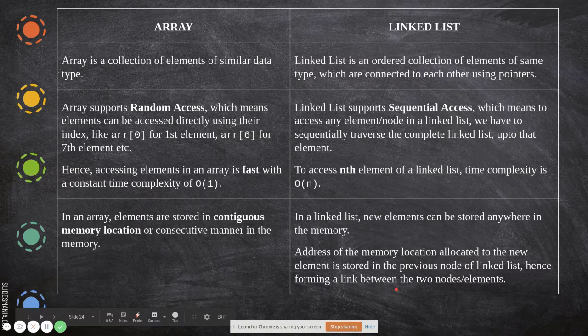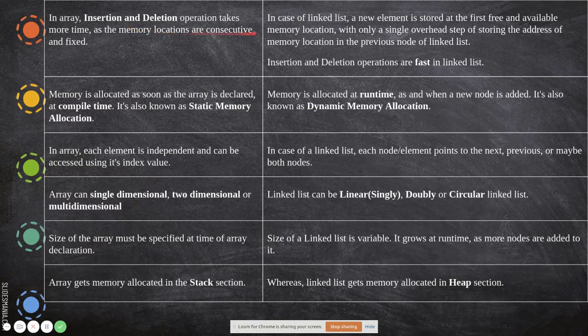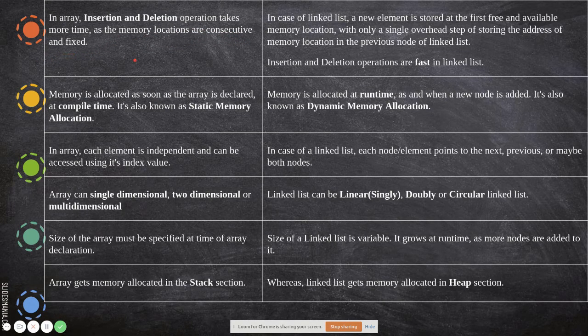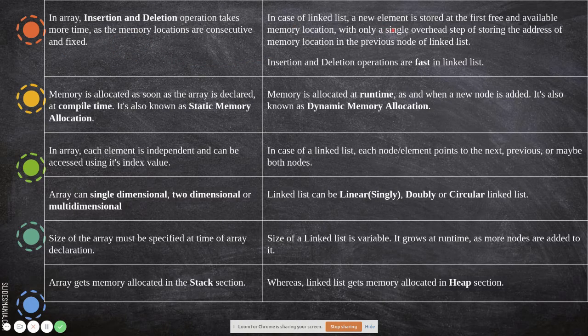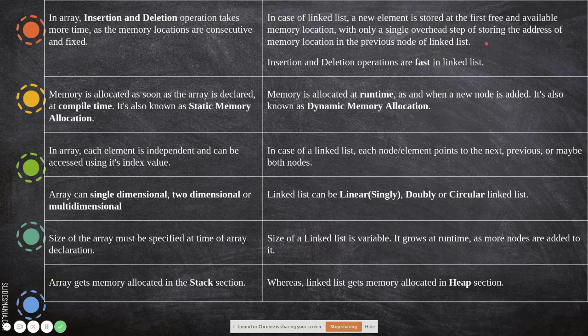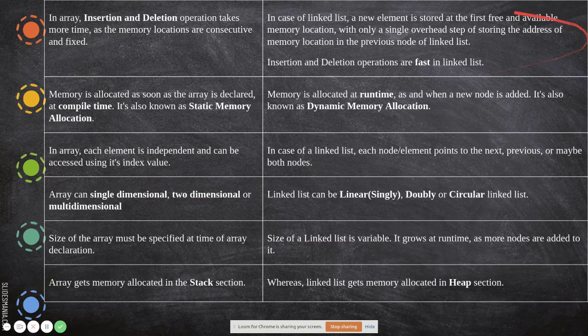In array, insertion and deletion operations take more time because we are moving up and moving down, as the memory locations are consecutive and fixed, so we have to move up and down. In case of linked list, a new element is stored at the first free and available memory location with only a single overhead step of storing the address of memory location in the previous node of the linked list. Insertion and deletion are very fast in the linked list because of this manipulation of pointers.